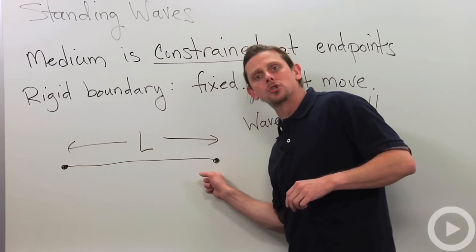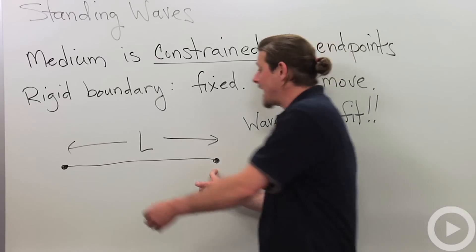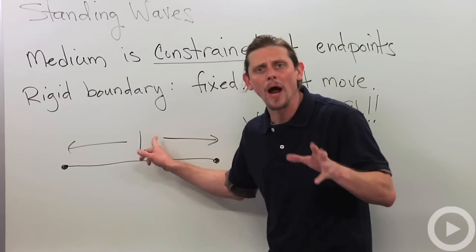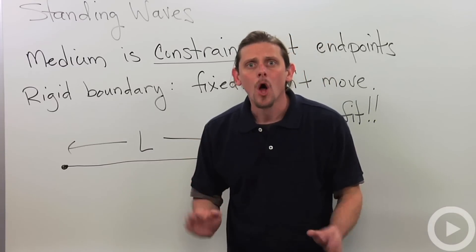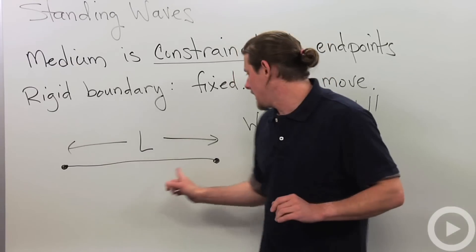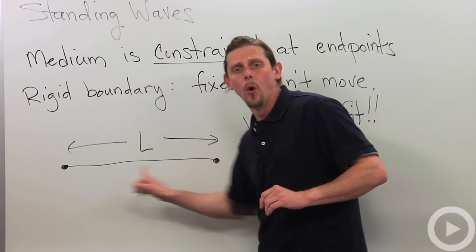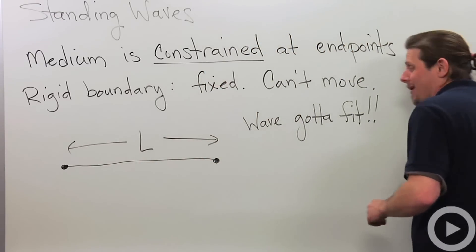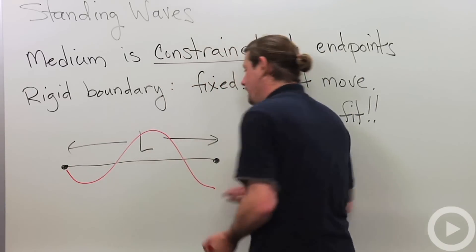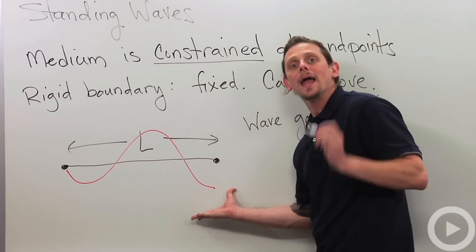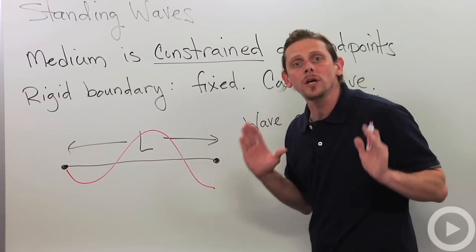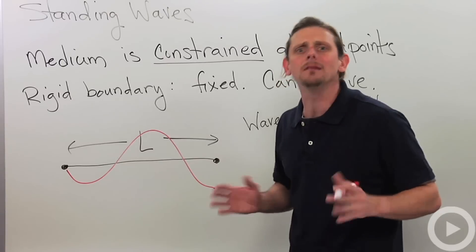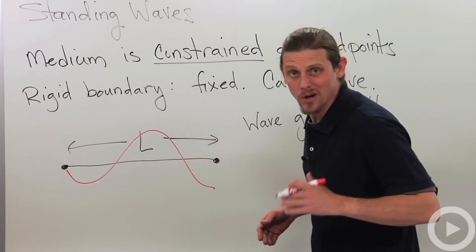So let's consider a string like a violin or a guitar string that has rigid boundaries at both ends and has got length L. Now here's the idea. The wave has to fit in between these two boundaries because if I were to just draw a random wave, look at it, here we go, oop, doesn't work. It has to fit. So that means that only certain wavelengths are going to be allowed. So let's see some situations in which this occurs.